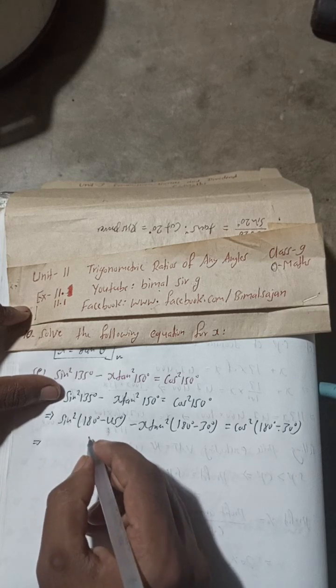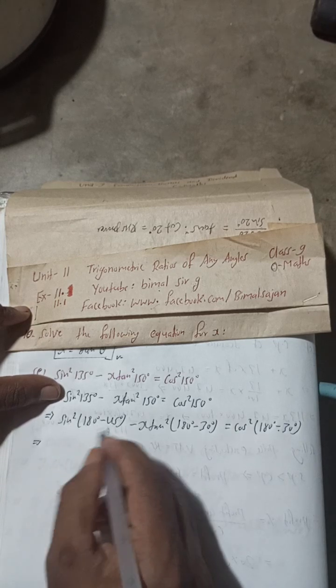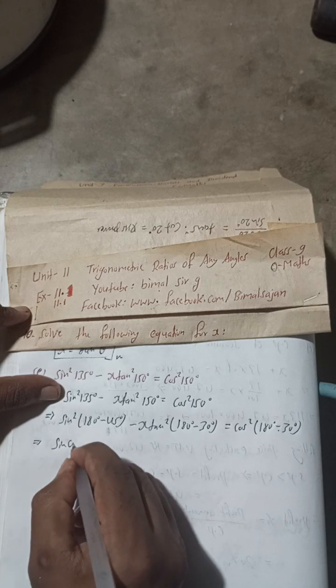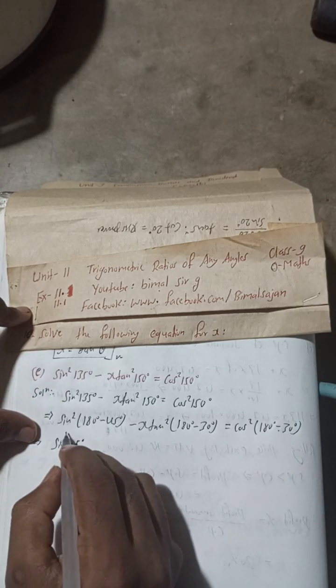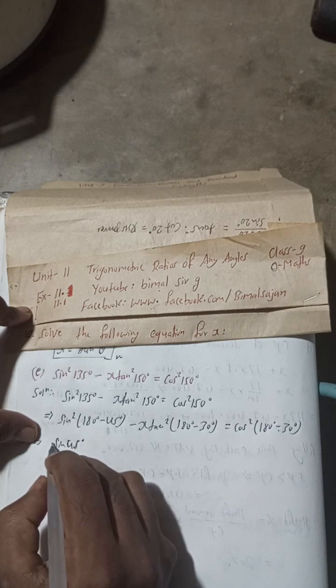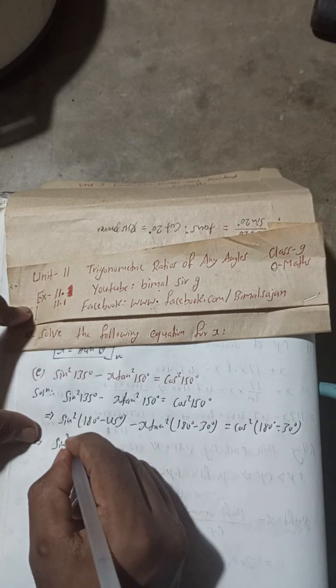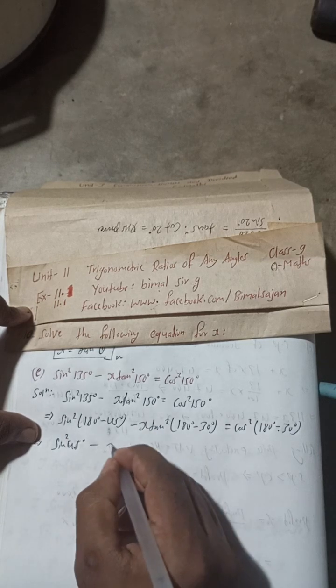Now, for sin(180° - θ), this will be sin 45°, and there is a square. So whatever the value will come here, that will be positive. So no need to write here plus-minus, okay? Got it.